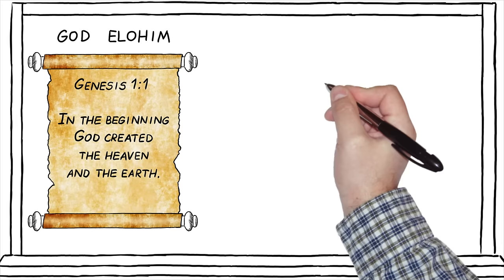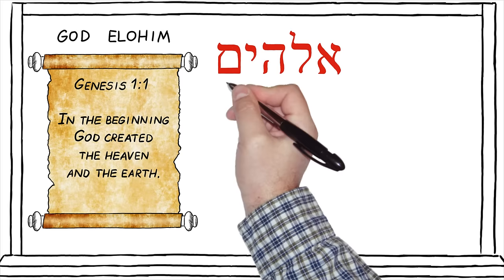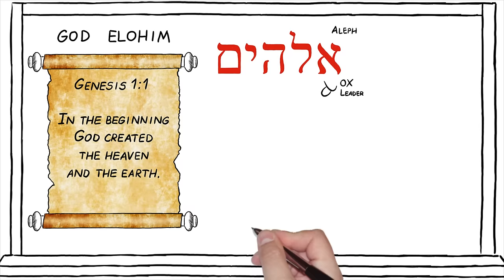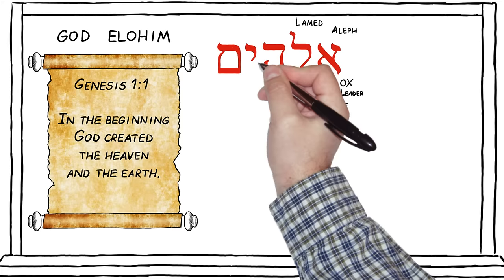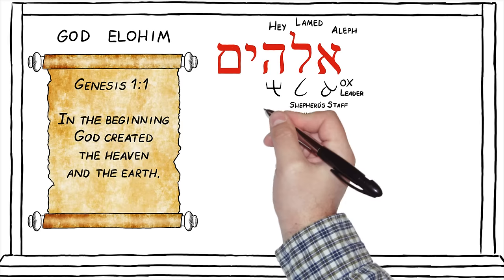Let's look at the picture meaning based on the five letters — Aleph, Lamed, He, Yod, and Mem — in the name Elohim. Aleph, pictured as an ox, means the strong leader. Lamed, pictured as a shepherd's staff, means the one that has control and the one that speaks with authority. He, pictured as a man lifting his hands up to heaven, signifies that true revelation comes from heaven alone — it means to reveal.